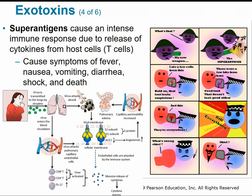Superantigens can cause an intense immune response due to the release of cytokines from T cells and immune system cells. This can lead to a cytokine storm with symptoms of fever, nausea, vomiting, diarrhea, shock, and even death. The superantigen causes an overreaction of the immune system — detecting that antigen in various locations of the body and triggering a massive release of cytokines. This is also a concern in COVID-19 infections.